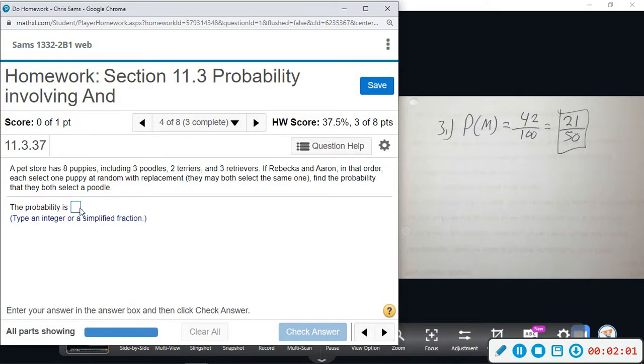Number four: a pet store has eight puppies including three poodles, two terriers, and three retrievers. If Rebecca and Aaron, in that order, each select one puppy at random with replacement...